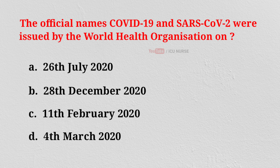The official names COVID-19 and SARS-CoV-2 were issued by the World Health Organization on: A. 26th July 2020. B. 28th December 2020. C. 11th February 2020. D. 4th March 2020. And the correct answer is?